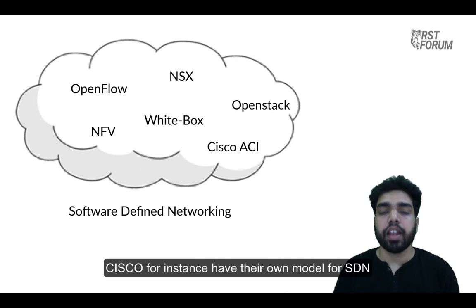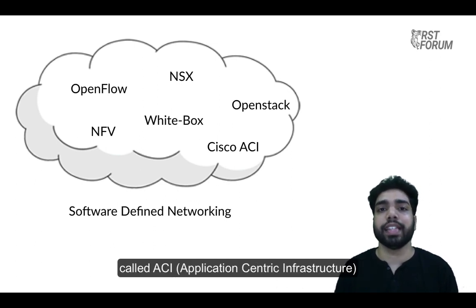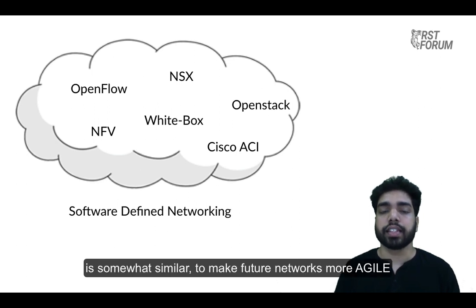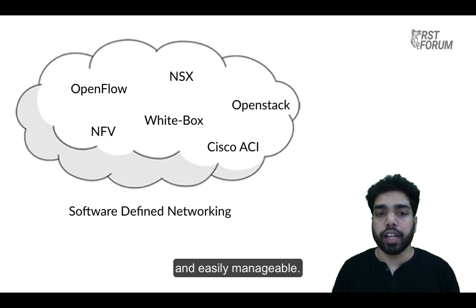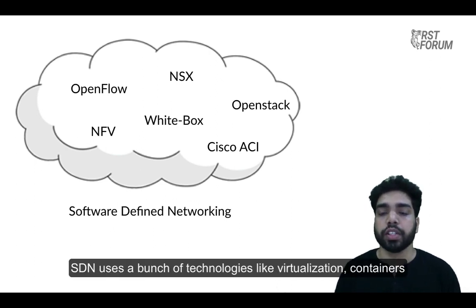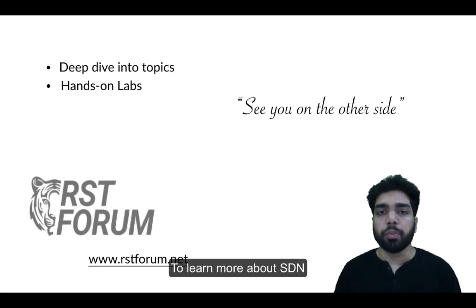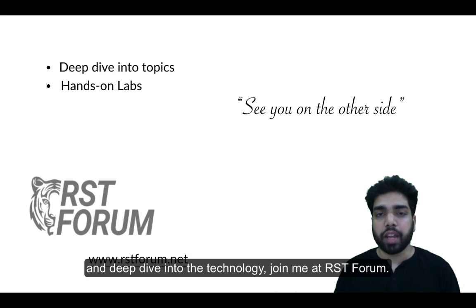That's just one model of SDN I explained. SDN is not limited to that — today there are several different models of SDN in which it simplifies and makes your future networks more manageable. These models are backed by several vendors who are betting their money and resources on one of these kinds of models. Cisco, for instance, has their own model for SDN called ACI — Application Centric Infrastructure. The goal of all SDN models is somewhat similar: to make future networks more agile and easily manageable. SDN uses a bunch of technologies like virtualization, containers, and advanced packet encapsulation techniques like VXLANs.